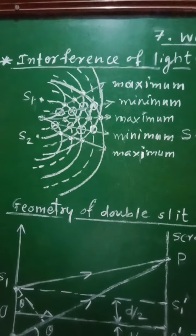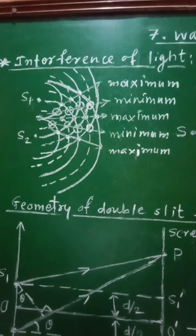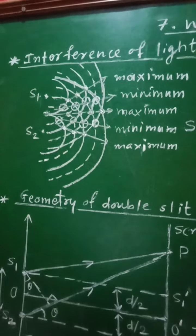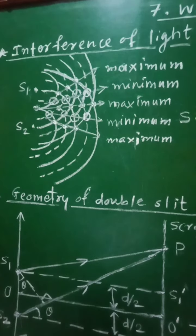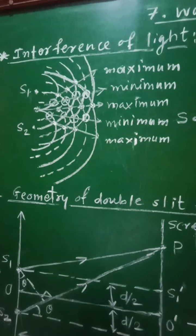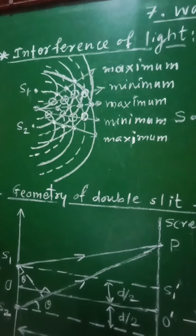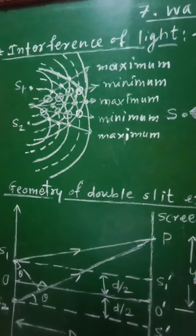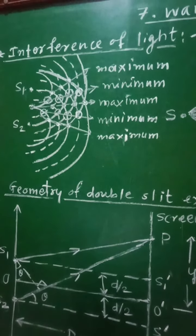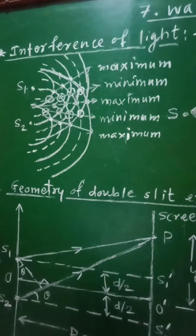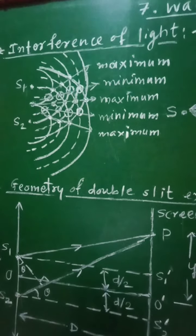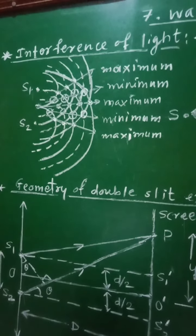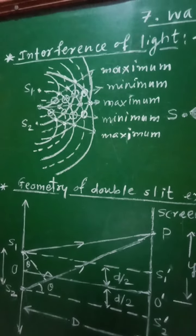To study interference of light, let us consider the principle of superposition of waves, which is stated as: when two or more than two waves traveling through a medium arrive at a point simultaneously, each wave produces its own displacement at that point independent of the other. The resultant displacement at that point is equal to the vector sum of the displacements due to these waves.